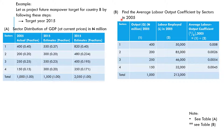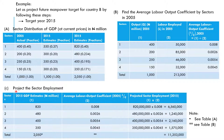Next, find the average labor output coefficient using the 2005 data. The output for 2005 and the labor employed in 2005 are given in the table. To get the average labor output coefficient, it will be labor divided by output. For example, sector 1 gives 1 divided by 2, and that is how we arrive at the coefficients. Then, to project sector employment in 2015, we use the GDP estimate in Naira million from Table A, which gives 2,050 million Naira for that sector.